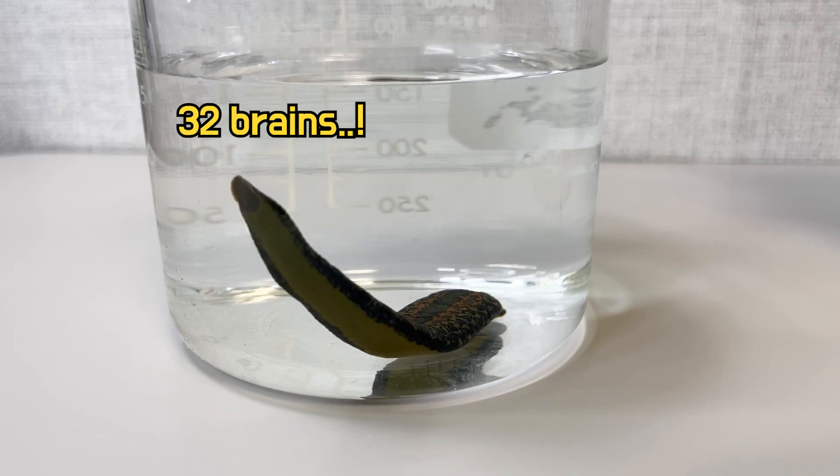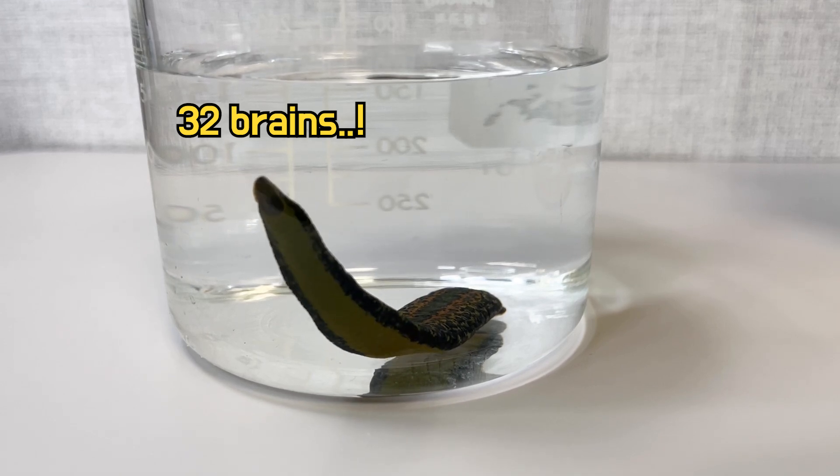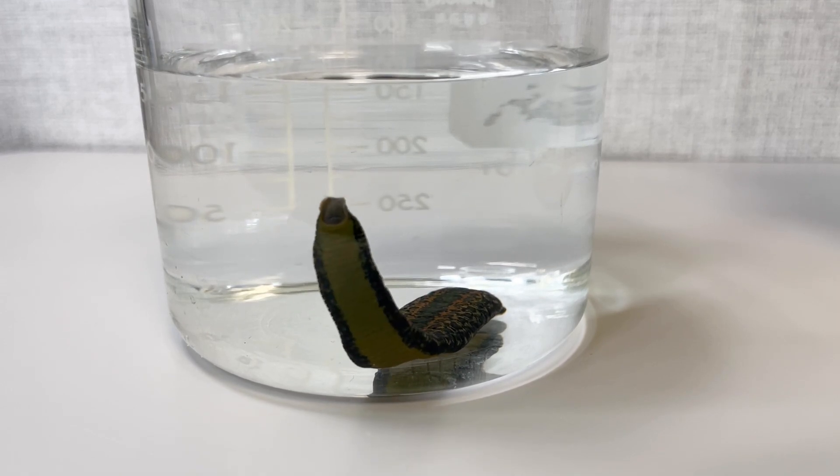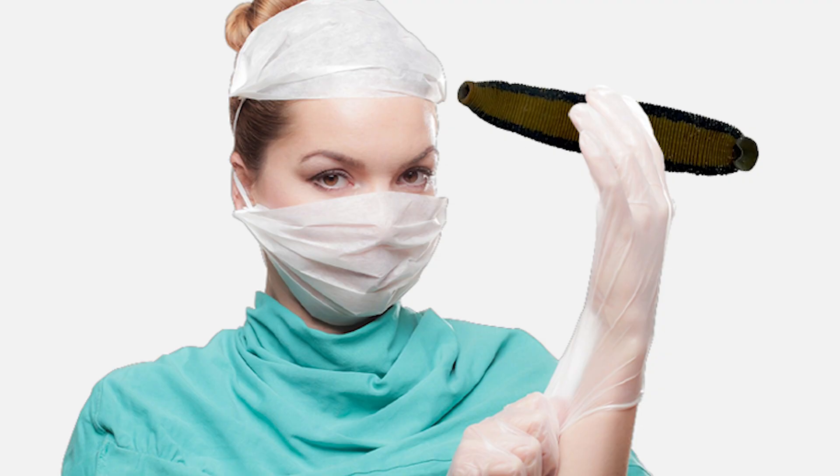Leeches are sometimes referred to as organisms with 32 brains. Fascinating, isn't it? That concludes the leech dissection. If you enjoyed watching, please consider subscribing.